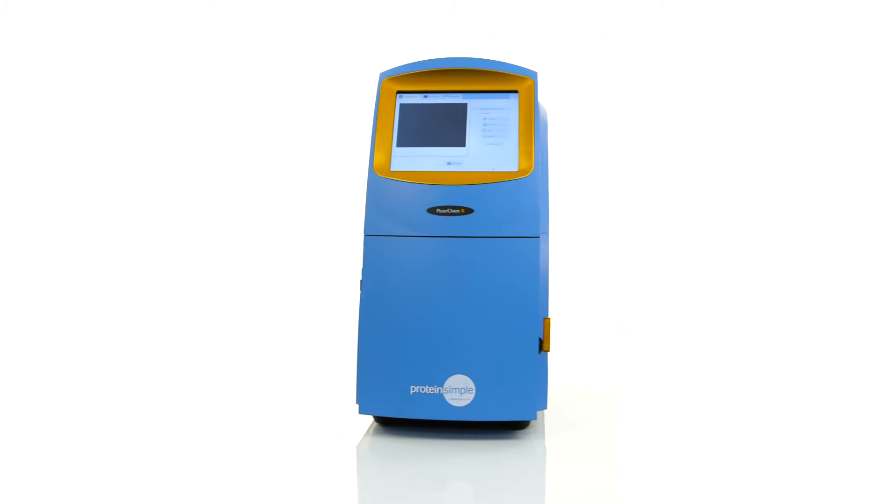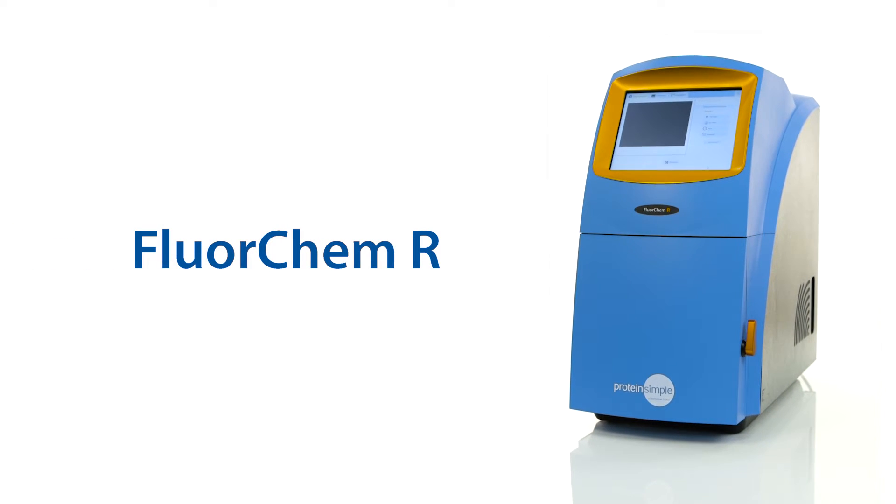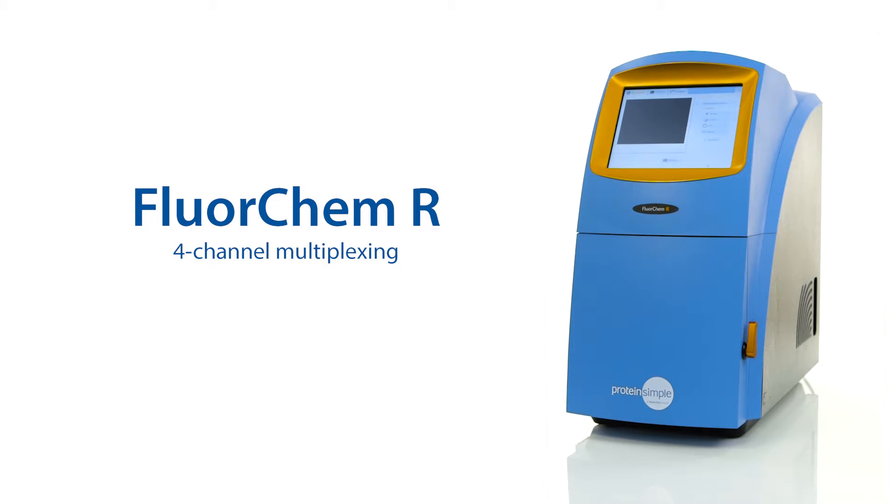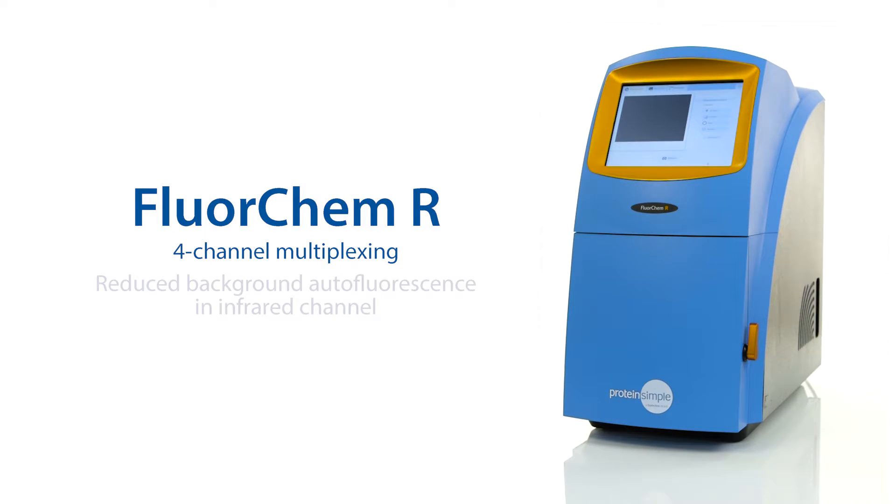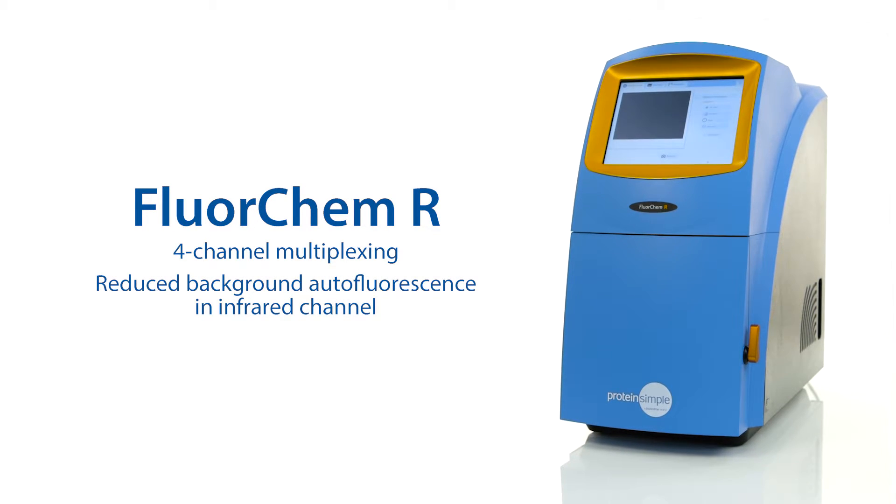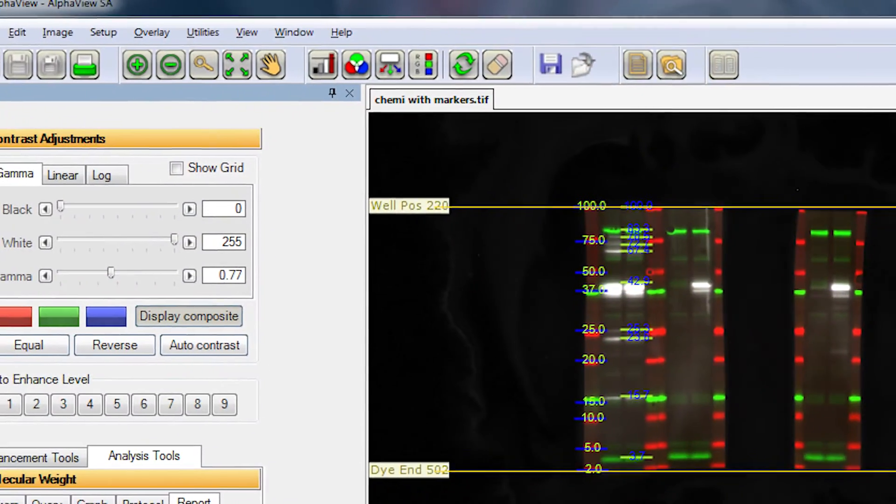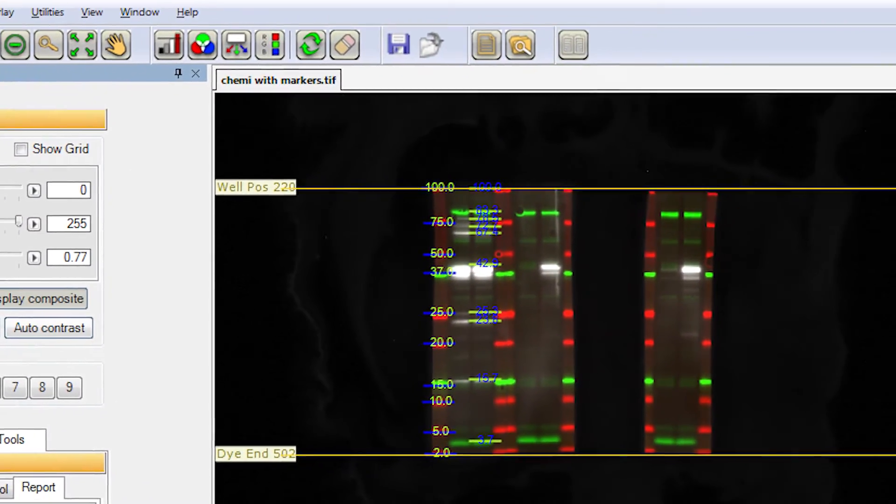With infrared excitation and detection, the FluorChem R system gives you four-channel multiplexing, with reduced background autofluorescence in the infrared channel. With easy-to-use software, taking high-quality images is a breeze.